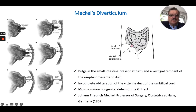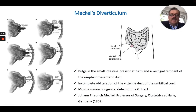A Meckel's diverticulum is essentially an incomplete obliteration of the vitelline duct of the umbilical cord. It is the most common congenital defect of the gastrointestinal tract.